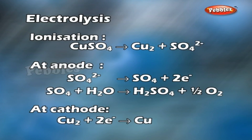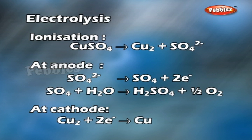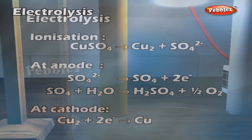At anode: SO4²⁻ gives SO4 + 2e⁻, and H2O gives H2SO4 + ½O2. At cathode: Cu²⁺ + 2e⁻ gives Cu.